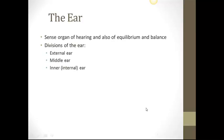The ear, the sense organ of hearing, is also responsible for equilibrium and balance. There are three main divisions of the ear: the external ear, the middle ear, and the inner ear. The middle ear and the inner ear are hidden deep within the temporal bone.